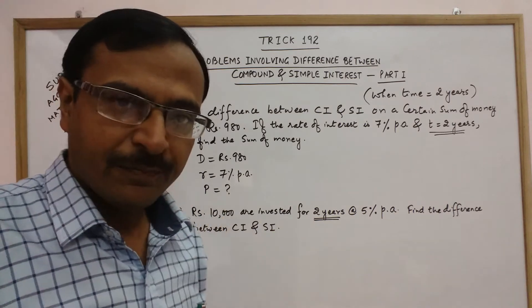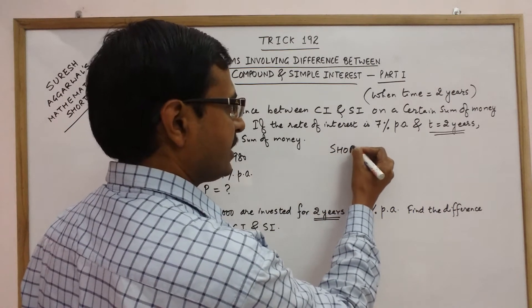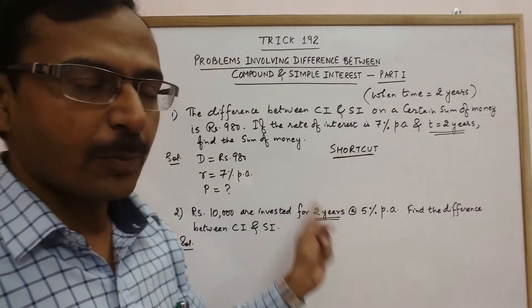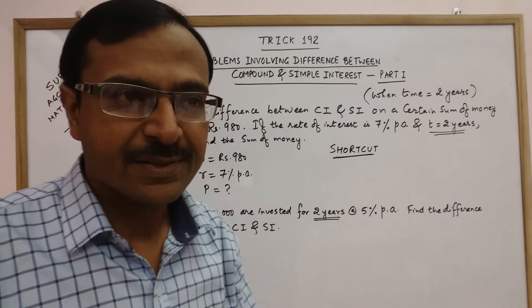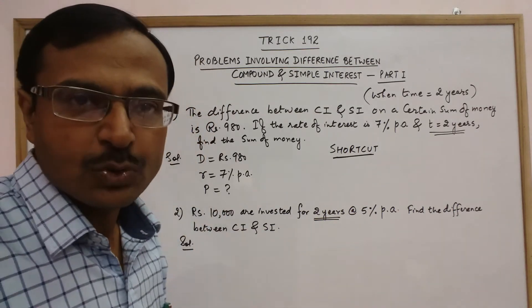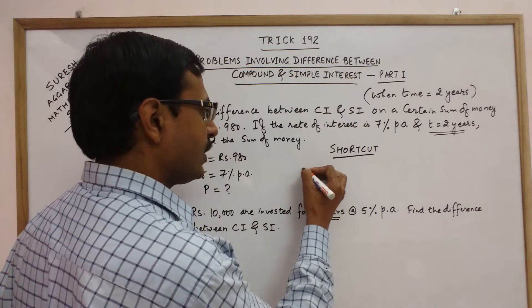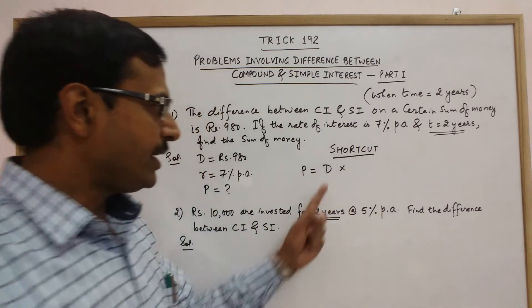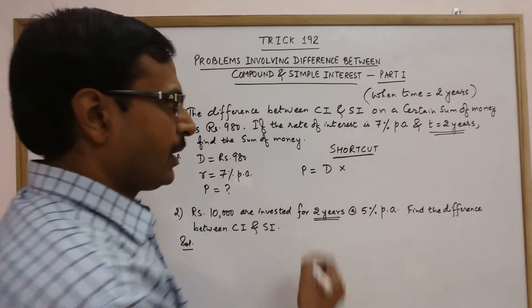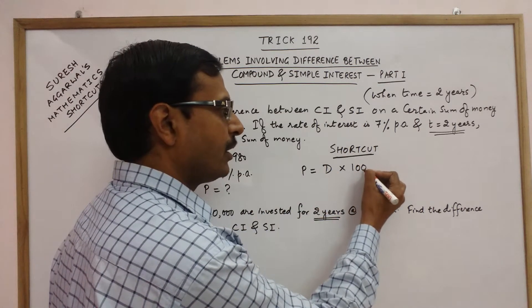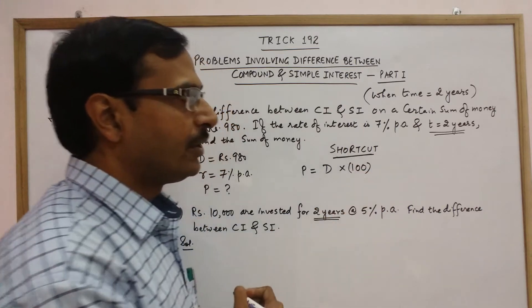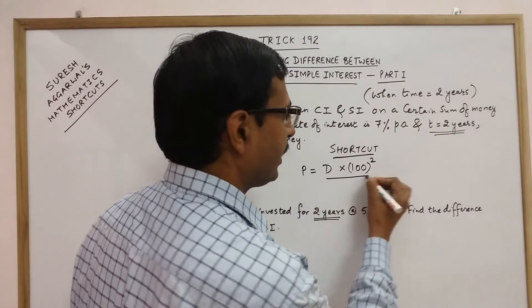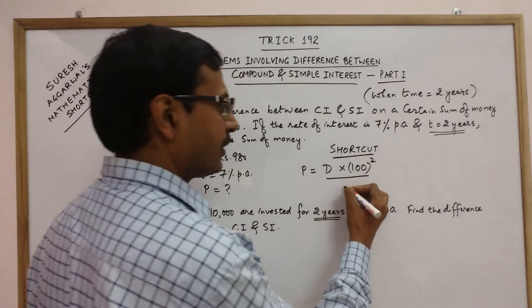Now for finding P, here is an amazing shortcut. This shortcut will enable you to solve this problem in just three to four seconds. The formula which we are going to apply is: P equals D, where P is the principal amount, D is the difference between the CI and SI, into 100 to the power of number of years, so here we have two years so this will be 100 square, divided by the rate of interest R, so R square.